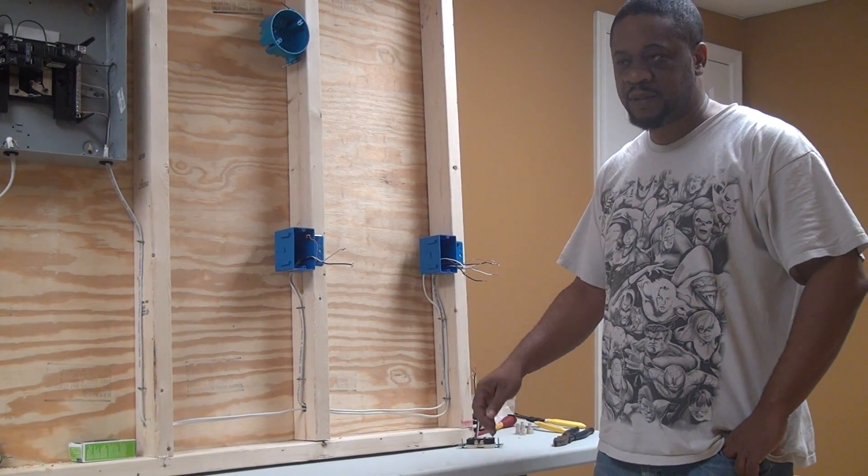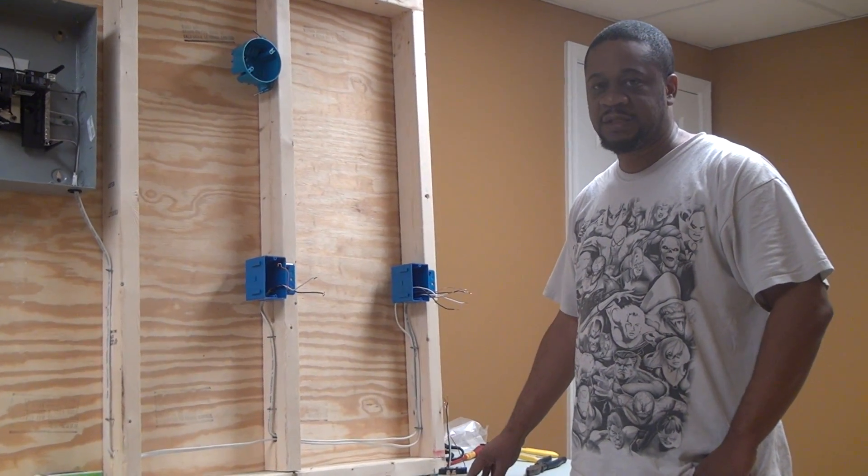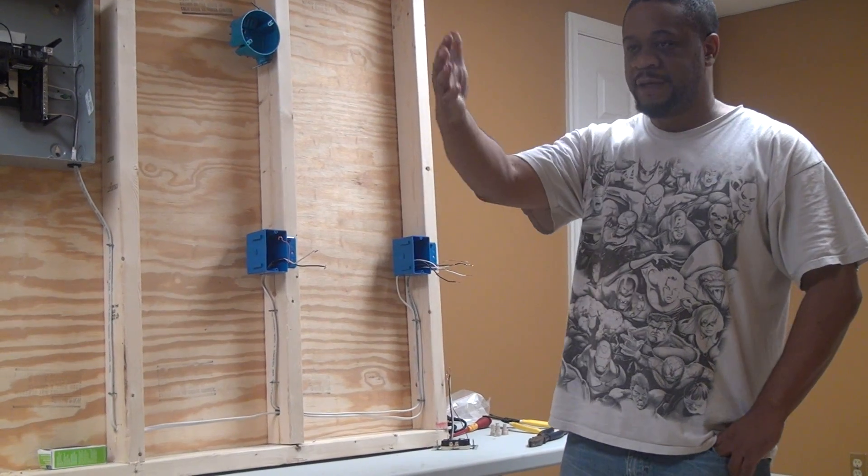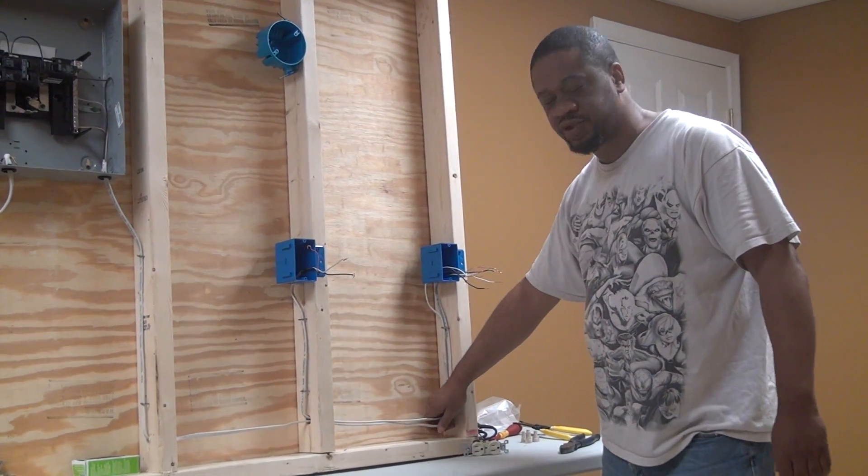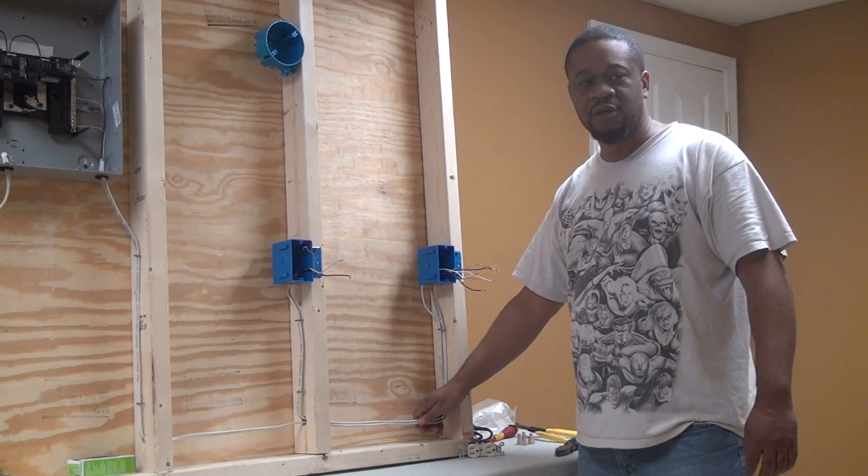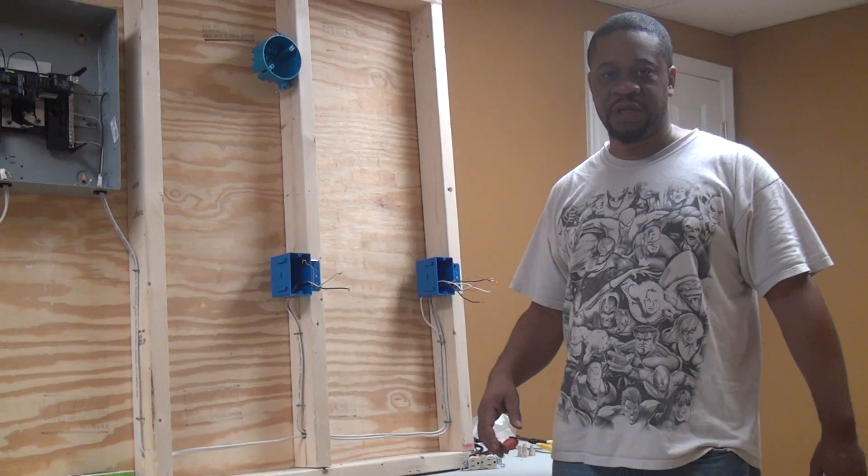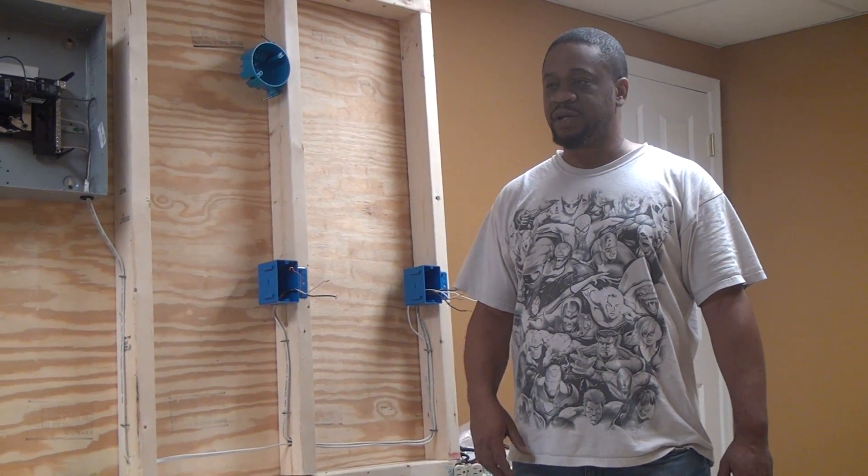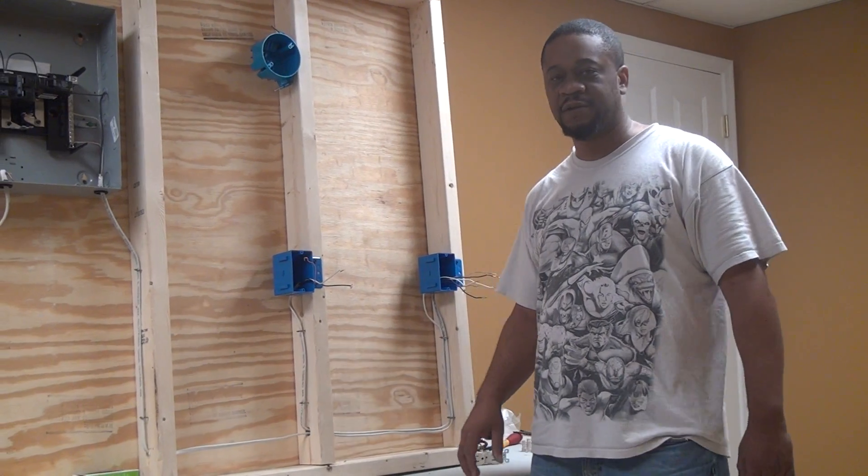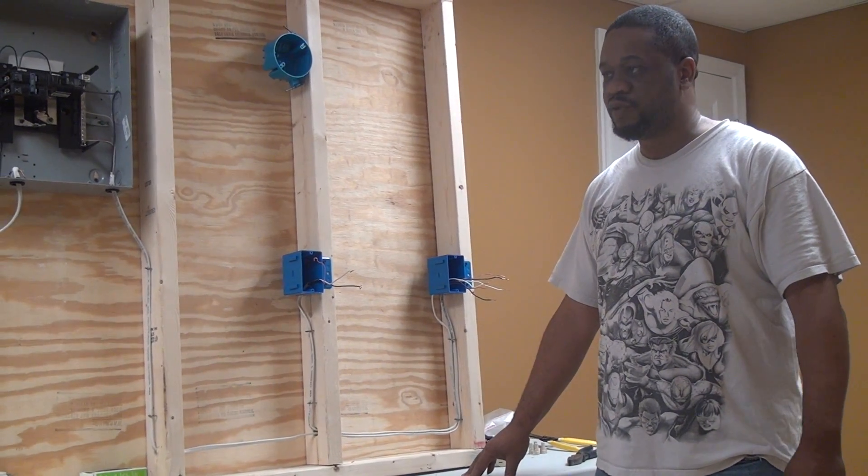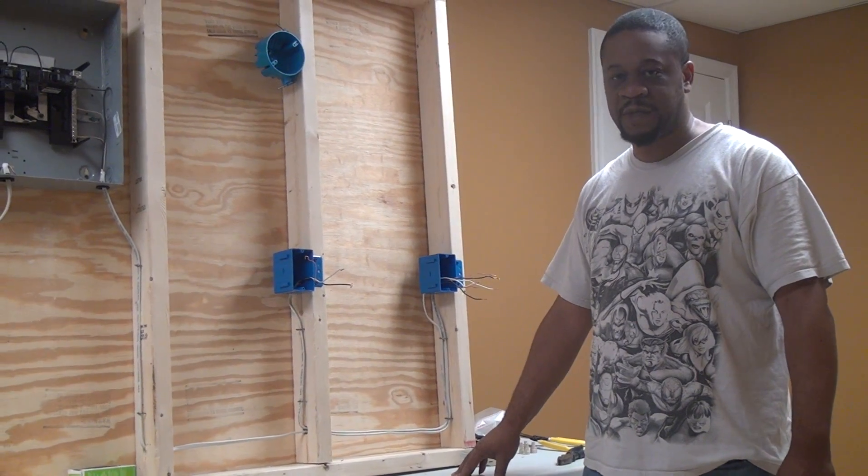That way you exceed the code requirements. The reason for that requirement is that most appliances have a six foot cord on them and it reduces tripping hazards. Anyways, this is not a code lesson. When you're laying out your basement or whatever room you're doing, you want to make sure that your outlets are no more than 12 feet apart and you want to have one within six feet of any door.